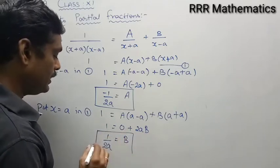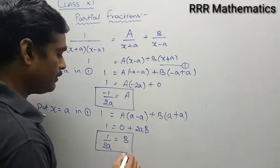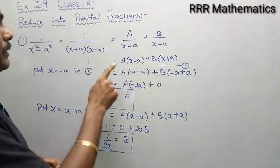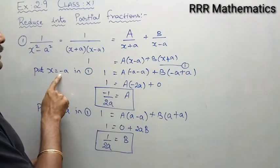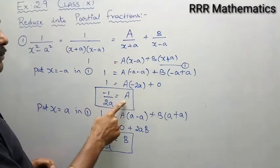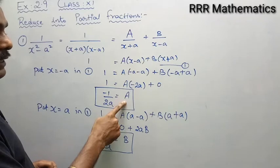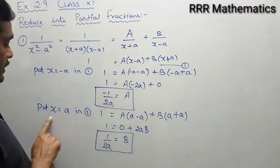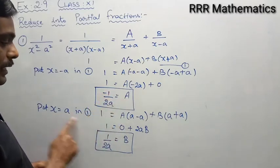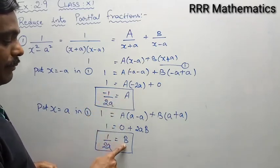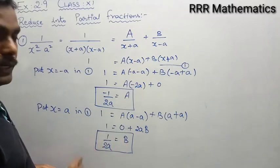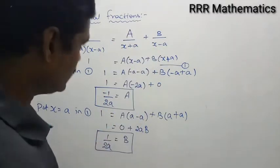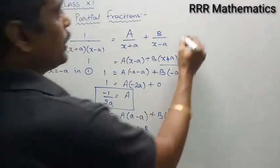So by replacing x equal to minus a we get capital A equal to minus 1 by 2a, and by replacing x equal to plus a we get capital B equal to 1 by 2a. Now we replace these two values back into the partial fraction setup to get the solution.